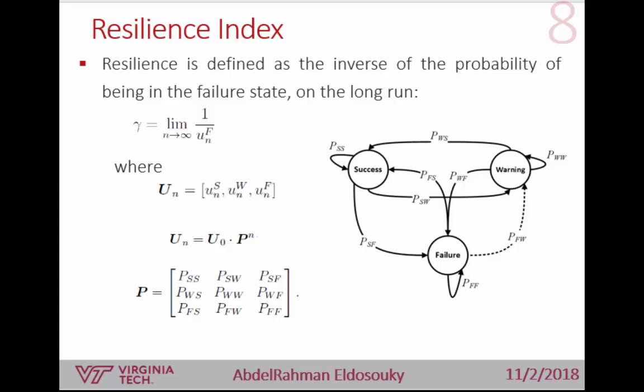The failure probability U_F is the failure component in the probability distribution vector at time step n. At every time step n, I have three probabilities for the whole system to be in either success, warning, or failure state. We can calculate this probability using our probability transition matrix — multiplying the initial probability distribution vector by this matrix raised to the power n to get the probability distribution vector at every time step.